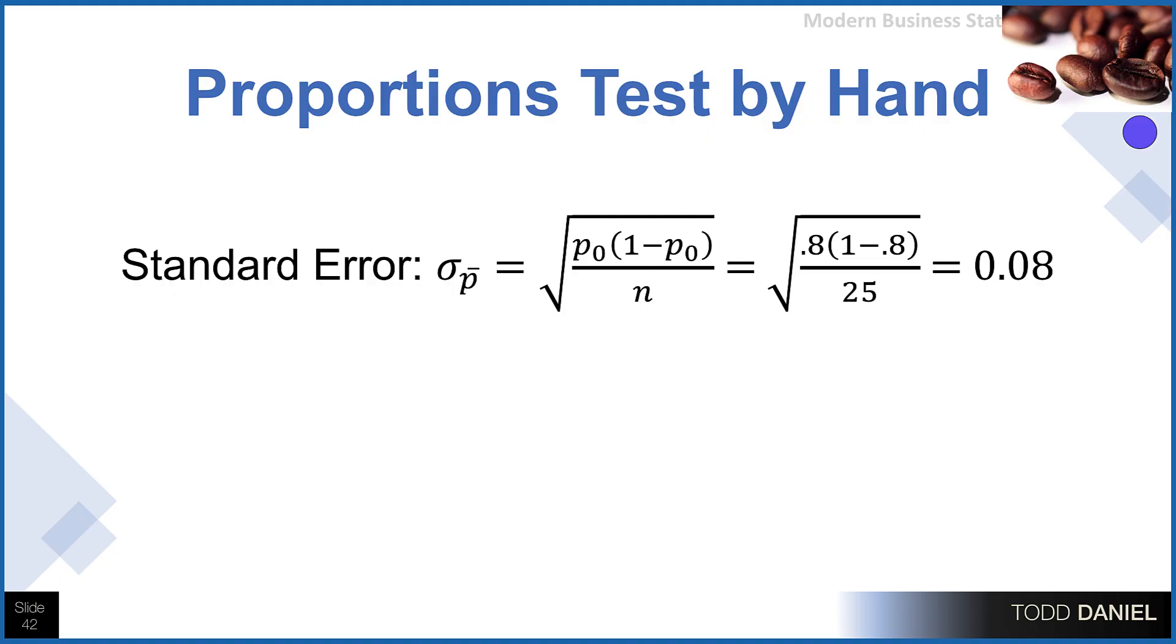Well now we are ready to calculate the statistics. This is the formula for the standard error. We would plug in the values from our test: 0.8 times (1 minus 0.8) divided by 25, take the square root, that gives us a standard error of 0.08. That's what we will use in the denominator for our test statistic. We will subtract the proportions, 0.72 minus 0.8, and divide by our standard error of 0.08, giving us a z-score of negative 1.00.